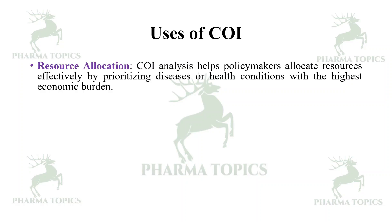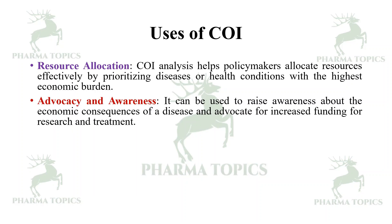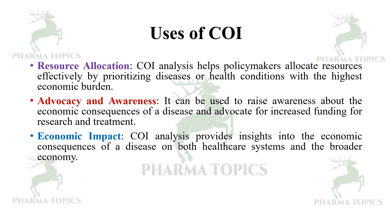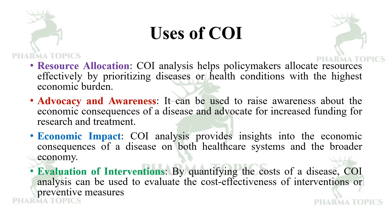Uses of COI: resource allocation — COI analysis helps policymakers allocate resources efficiently by prioritizing diseases with the highest economic burden. Advocacy and awareness — it can raise awareness about the economic consequences of a disease and advocate for increased funding for research and treatment. Economic impact — it provides insights into the economic consequences on both healthcare systems and the broader economy. Evaluation of interventions — by quantifying the costs of a disease, COI analysis can be used to evaluate the cost-effectiveness of interventions or preventive measures.